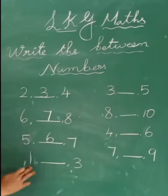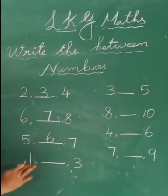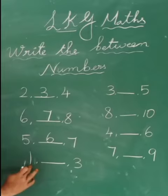Next one, 1 dash 3. Very easy, no. What makes you what number? 2. Very good. 1, 2, then 3. So what is the answer here? 2.